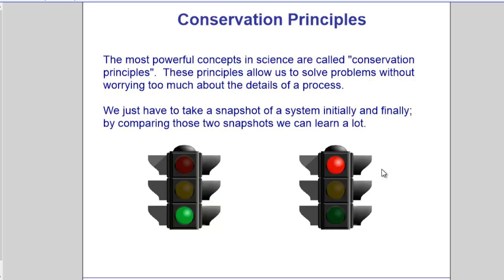Or if momentum is conserved, momentum before and after stays the same. Or if matter is conserved — let's say in a chemical reaction — the total amount of matter you start with is equivalent to what you end up with. So when we're looking at different physical systems, like a roller coaster going down a hill or a car coming to a stop, we're only interested in the initial condition and the final condition. We're never interested in what's happening in between. We'll say before and after, initial and final.